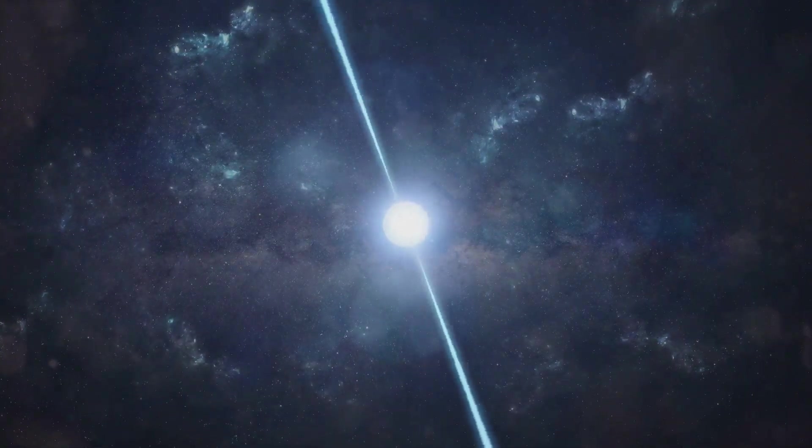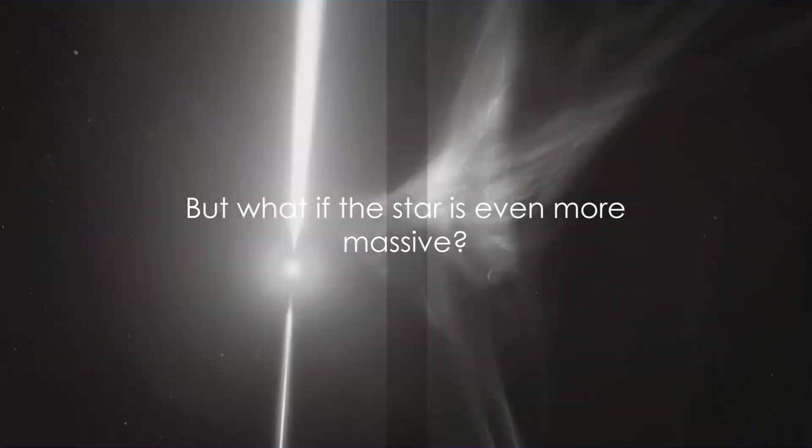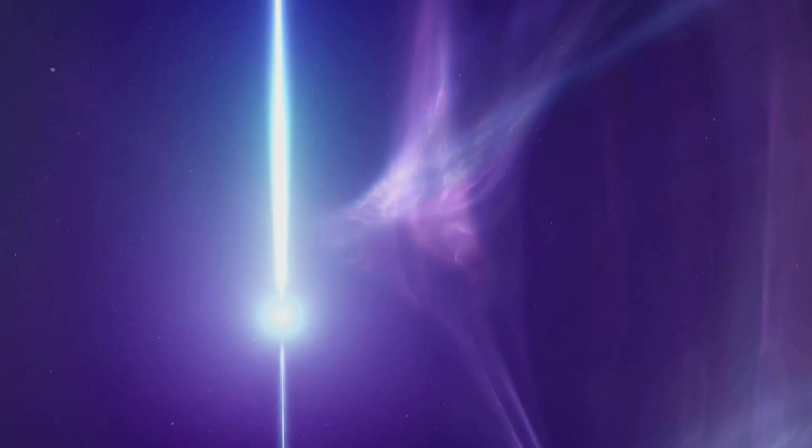In less than a second, the core shrinks from roughly the size of the Earth to a sphere only a few kilometers across. The density increases astronomically, and the core becomes what is known as a neutron star.